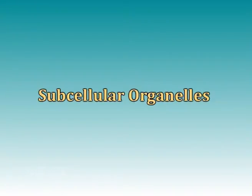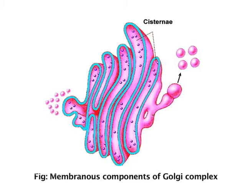First, let us see about the subcellular organelles. The first subcellular organelle that we are going to discuss is the Golgi apparatus. The Golgi apparatus, also called Golgi body or Golgi complex, is found universally in both plant and animal cells. They are made of 5 to 8 cup-shaped membrane-covered sacs called cisternae. In animal cells, about 10 to 20 cisternae are linked into a single complex by tubular connections between cisternae to form Golgi stacks, while in some unicellular flagellates,